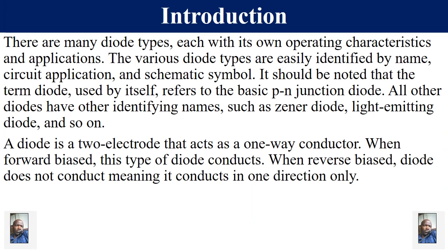It is important to note that there are many types of diodes — for example, Zener diodes, light-emitting diodes, photodiodes, signal diodes — and they also have different symbols. What we are discussing is simply a basic PN junction diode, which in most cases is referred to as a rectifier diode. The term diode refers to this basic PN junction diode with two electrodes — the anode and cathode. It conducts when forward biased and does not conduct when reverse biased.